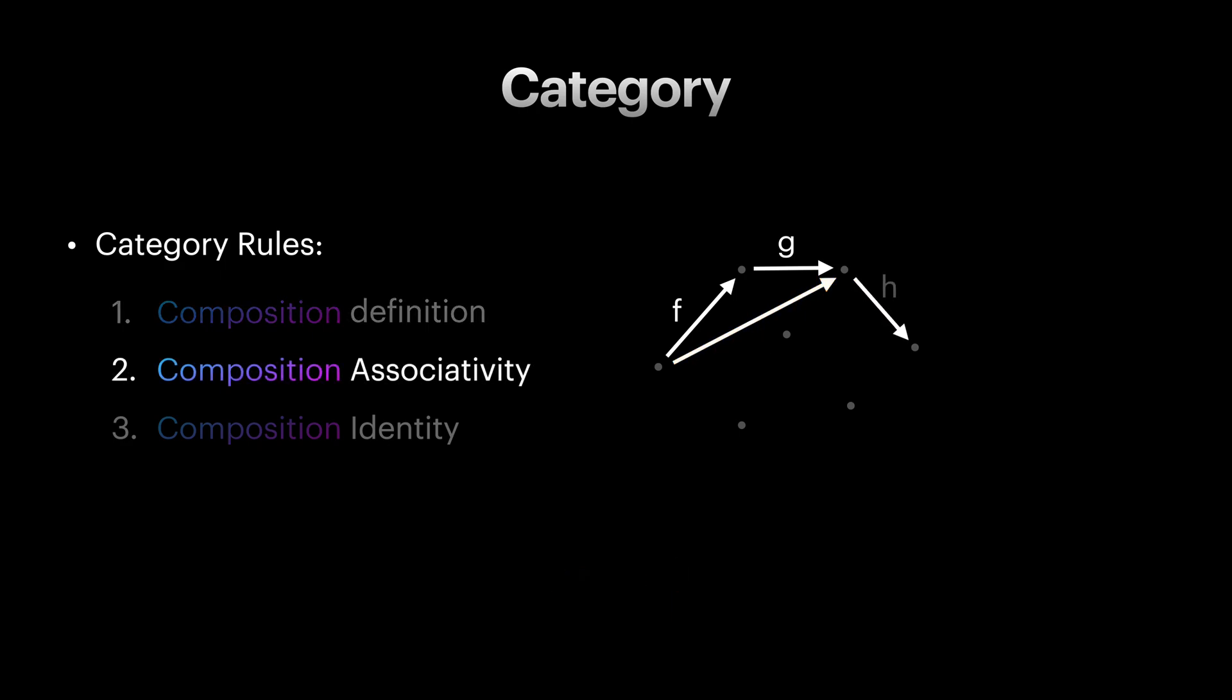The second rule is about composition of three arrows which are following each other. Considering the first rule, we'll automatically have these arrows as well. Let's focus on the final arrow, which is the composition of f, g, and h. The associativity rule states that the order of composing f, g, and h is not important. Meaning that if we compose f and g first, and then compose h with the result, we would get the exact same arrow when composing g and h first, and then composing f with the result of it. This is called associativity, and it is written like this.